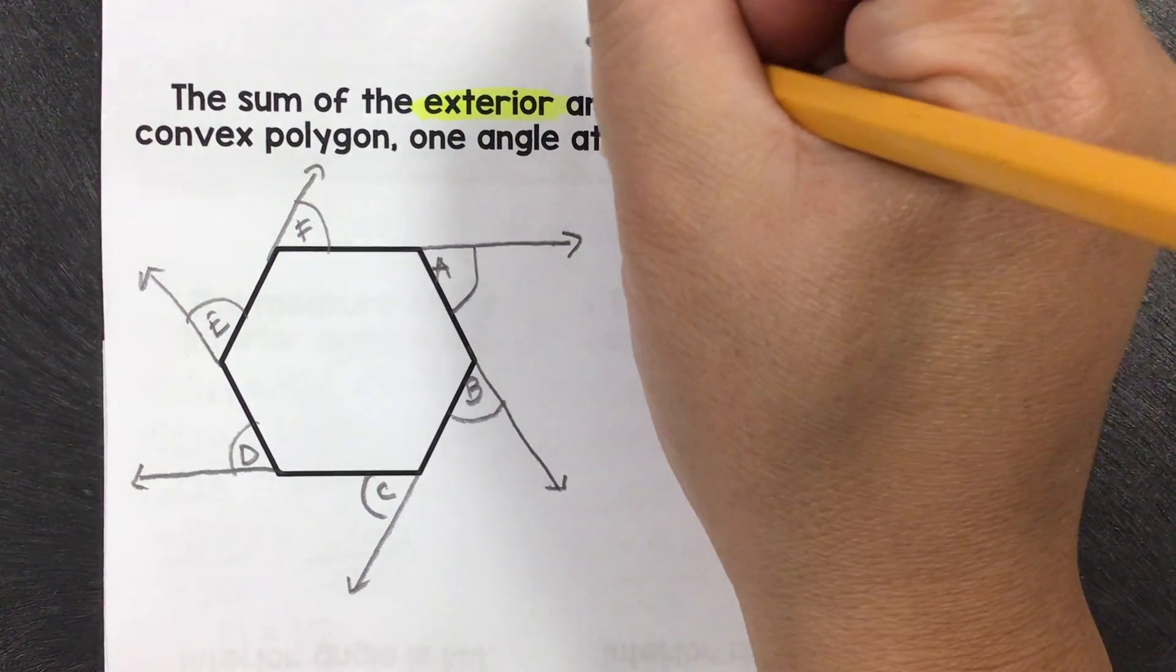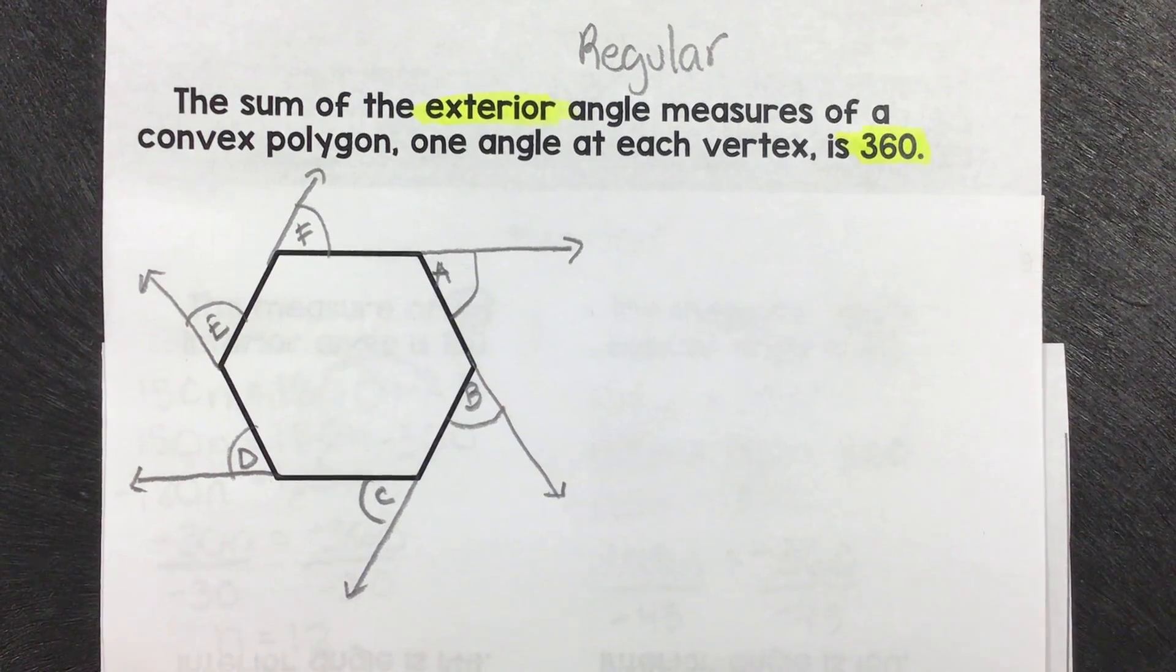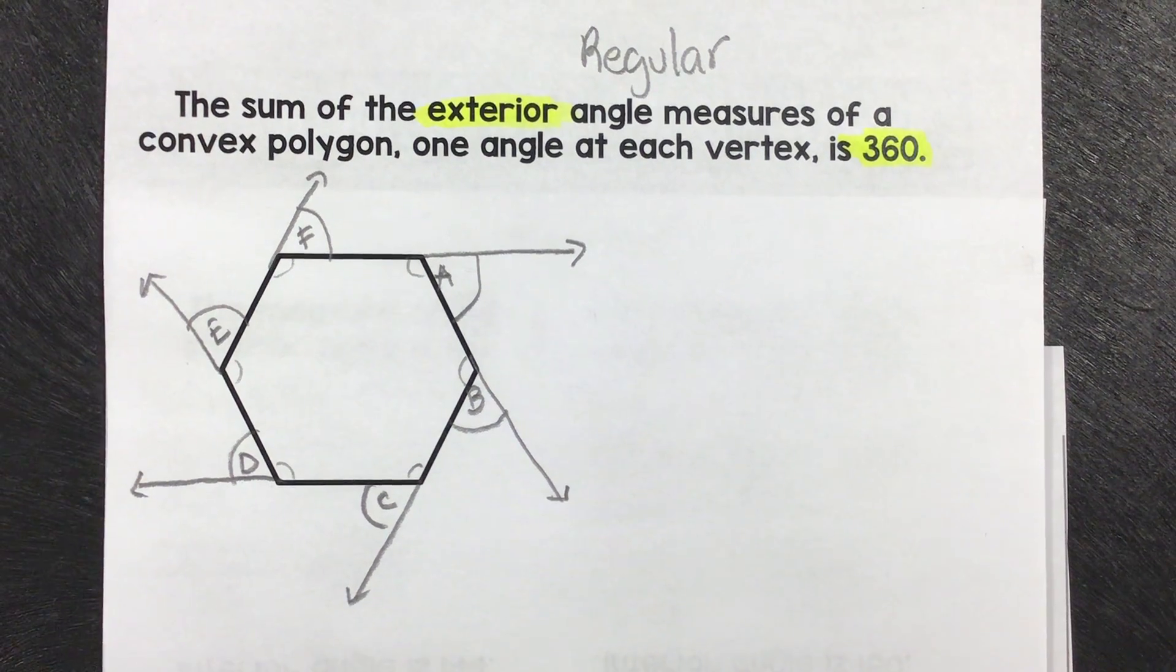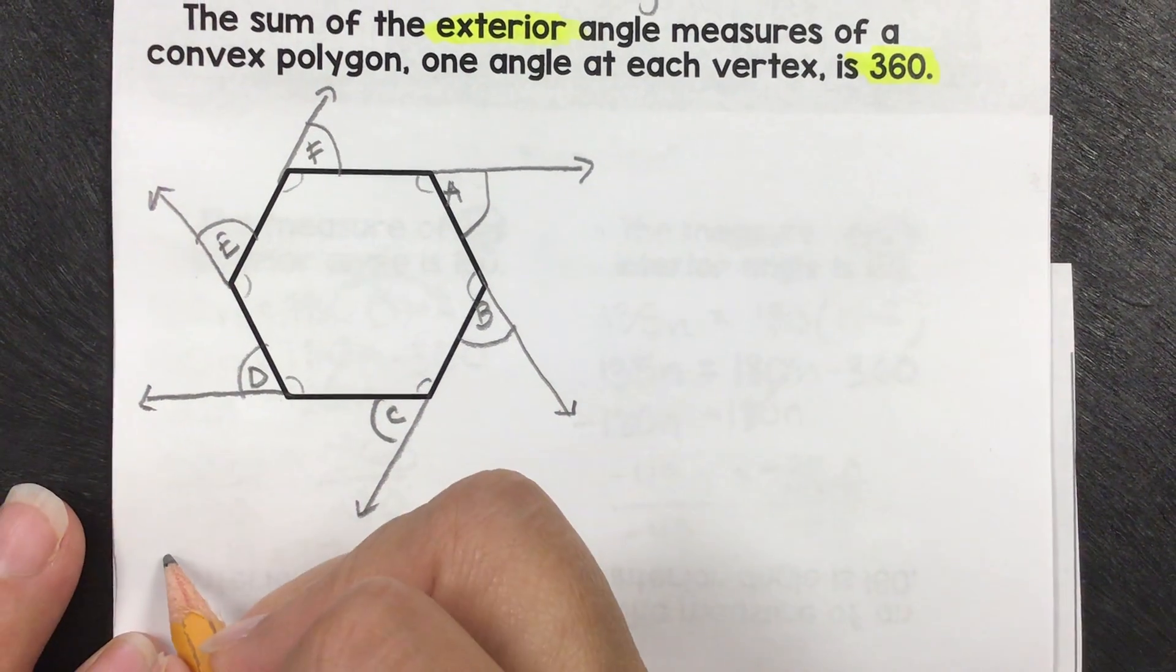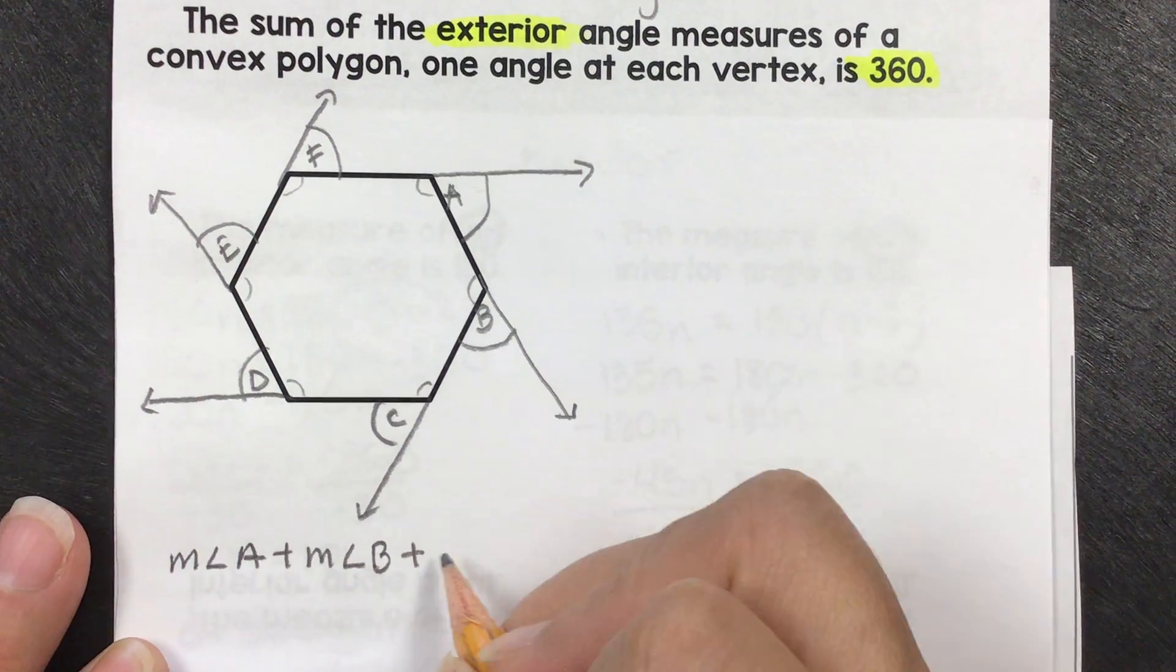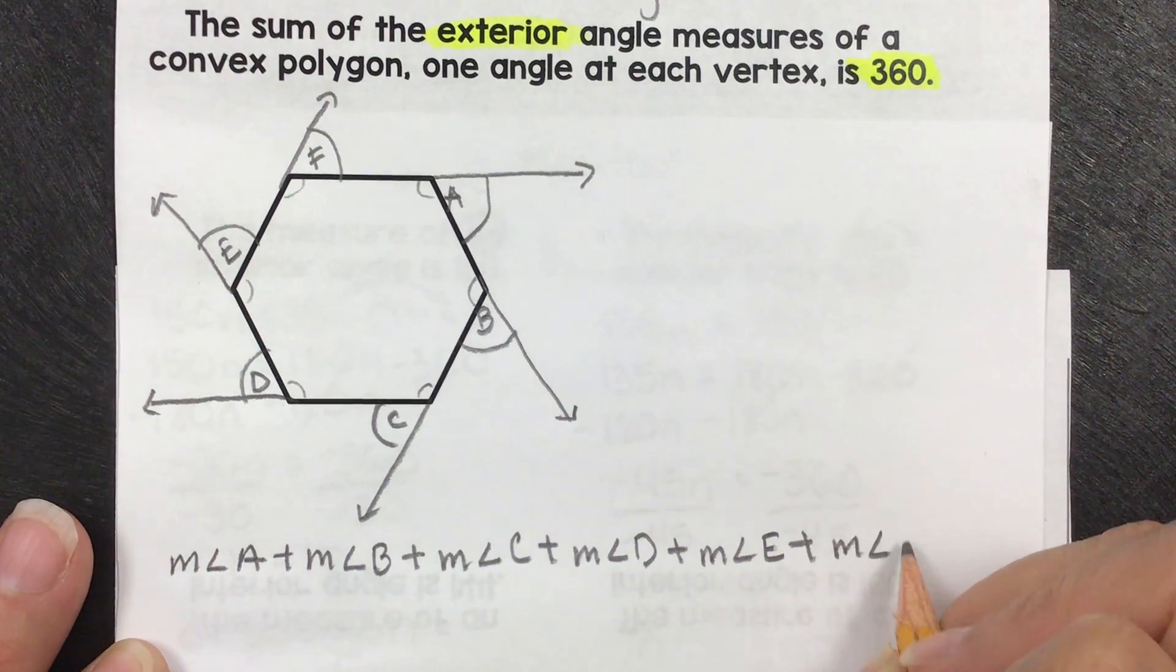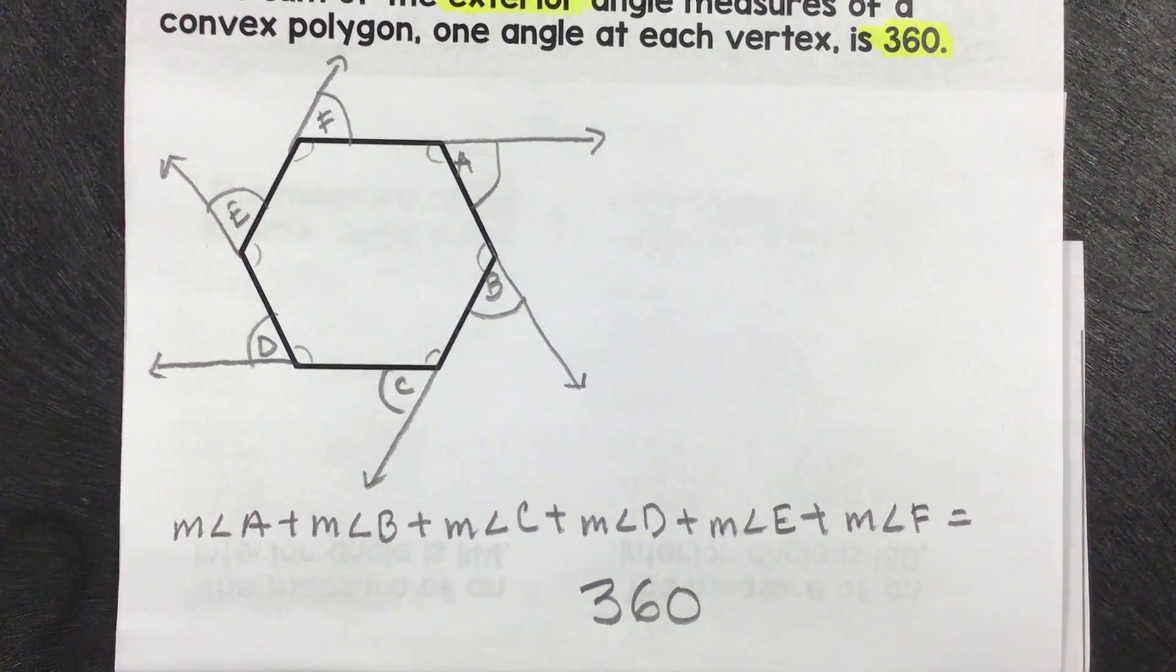This also will assume that you have a regular polygon. Remember, regular means that all the sides are equal and all the angles are equal. Why does that matter? That matters because that means that all the angles on the inside will be the same, and if all the angles on the inside are the same, the angles on the outside will be the same. This one will be then the measurement of angle a plus the measurement of angle b plus the measurement of angle c plus the measurement of angle d plus the measurement of angle e plus the measurement of angle f is equal to 360. So no matter how many angles you have, the exterior will always equal 360.